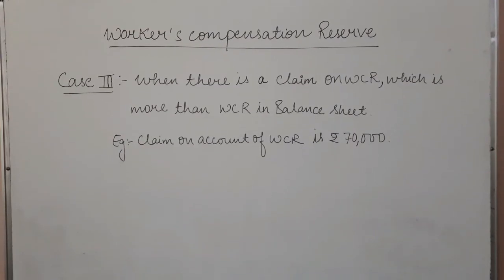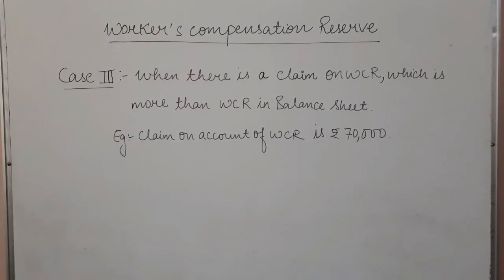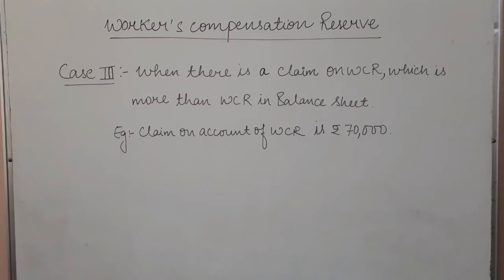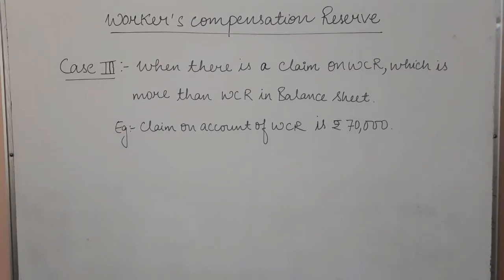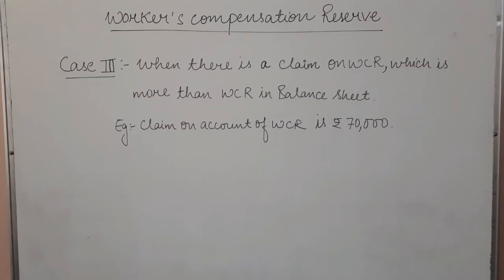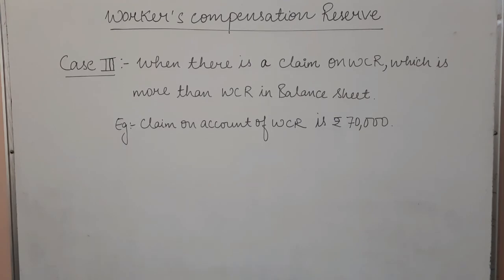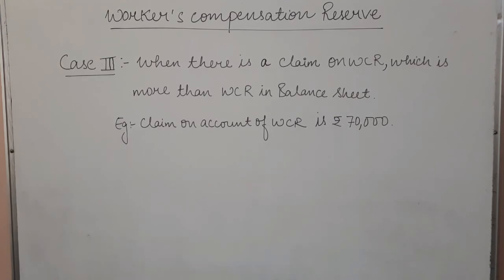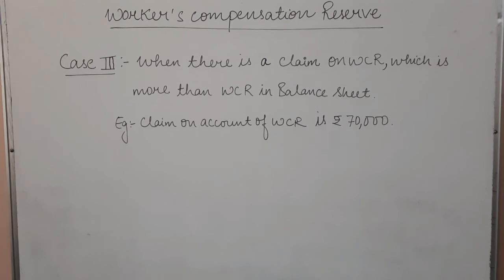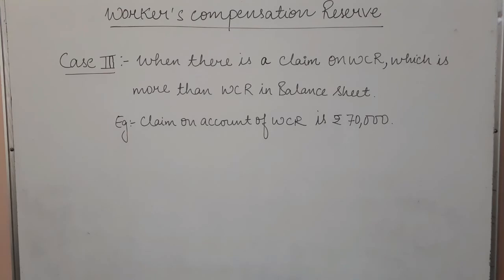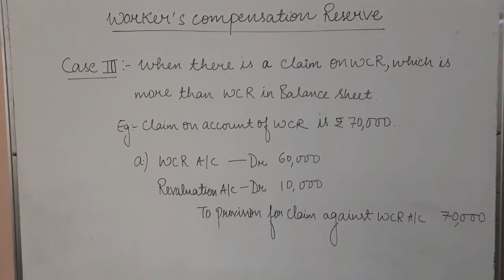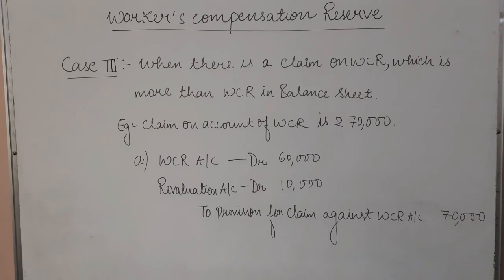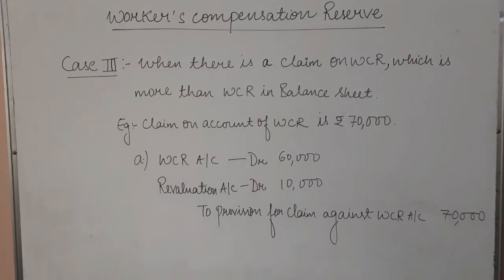Moving on to the third condition: when there is a claim on WCR which is more than workers' compensation reserve in the balance sheet. For example, the claim on account of WCR is Rs. 70,000, but the WCR in the balance sheet is only Rs. 60,000. You are short by Rs. 10,000. So the first entry will be: WCR account debit with Rs. 60,000, Revaluation account debit with Rs. 10,000, and total Rs. 70,000 transferred to provision for claim against WCR account.